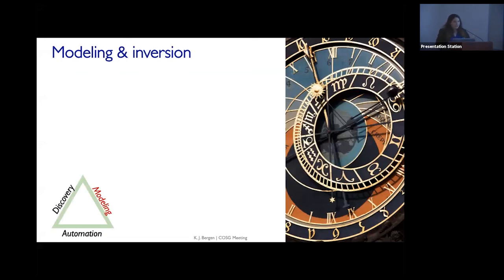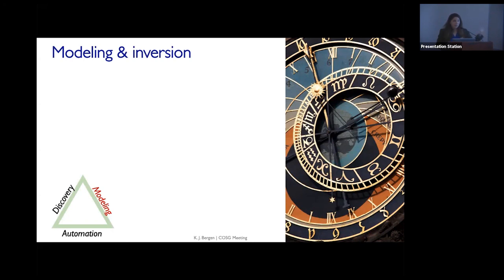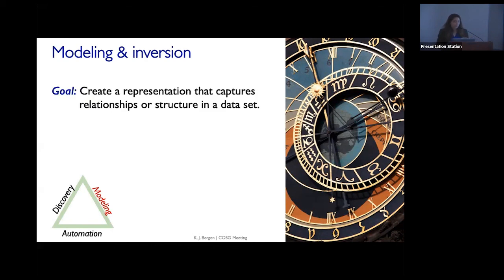There's been a lot of work in automation, and a little bit less in modeling and inversion, but I think this is an area that's really interesting and where I hope we'll see a lot of work in the near future. The idea in modeling is that we really want to use machine learning as a tool to build models — to create a representation that captures relationships or structure in the data. One of the things you can do with modeling is to learn a surrogate model — if you have some large simulation used to get an estimate of one value, machine learning can build a model that predicts those values with less computation.